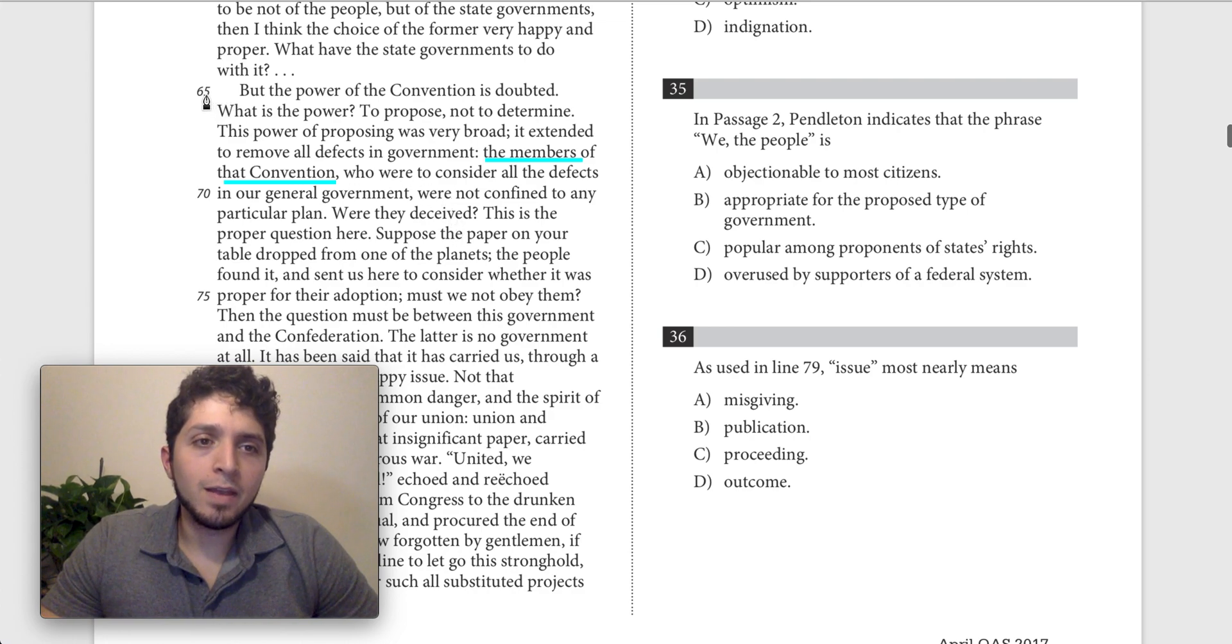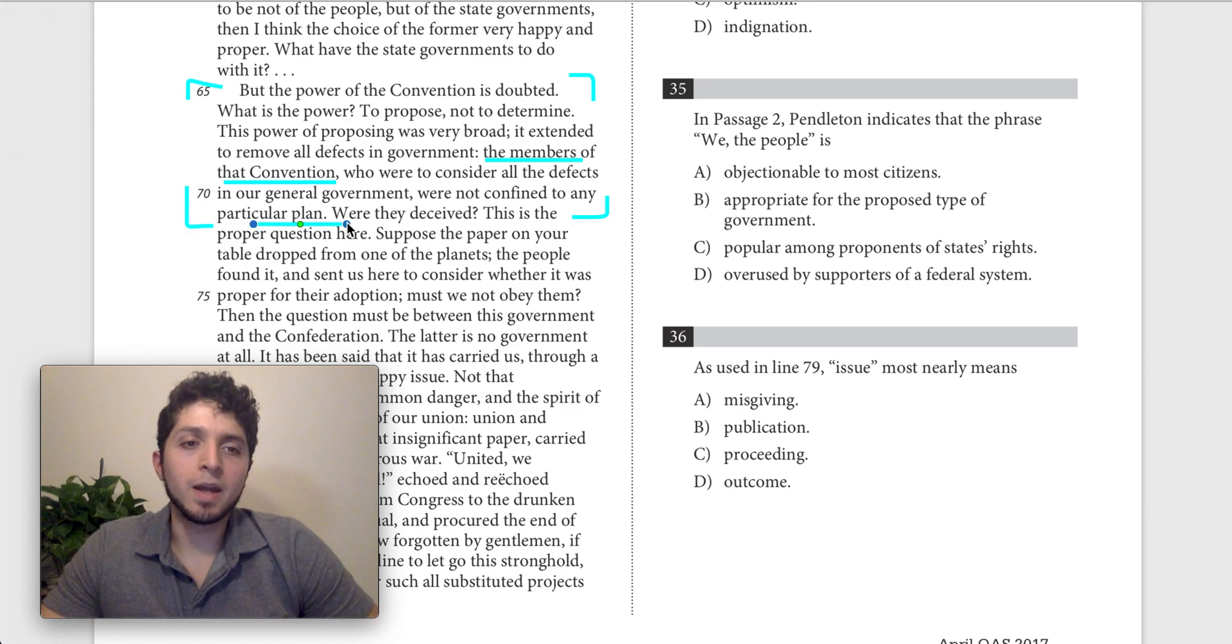So in context this is basically Pendleton objecting to the objection that the convention, the constitutional convention overstepped their power.